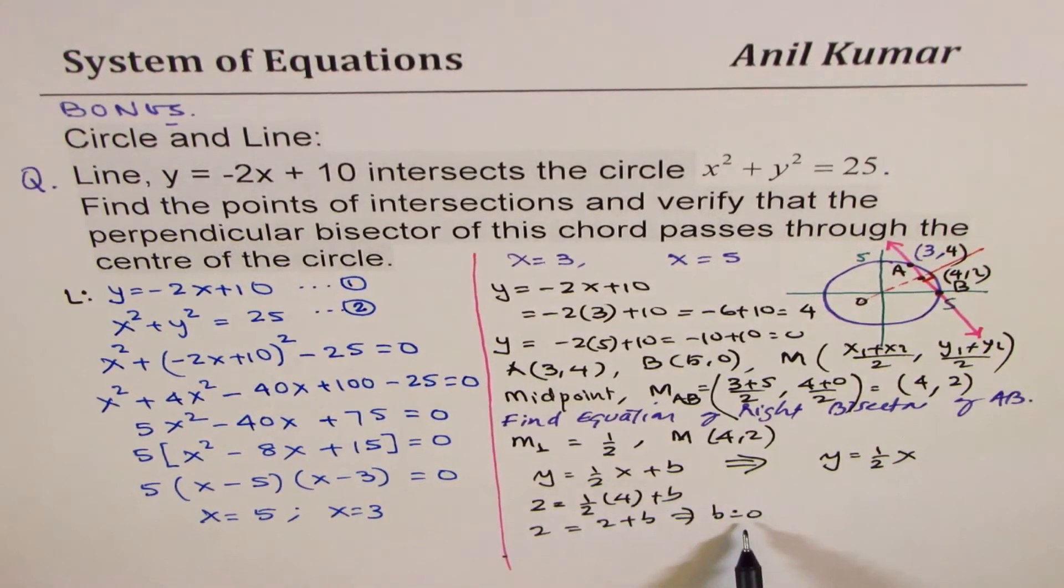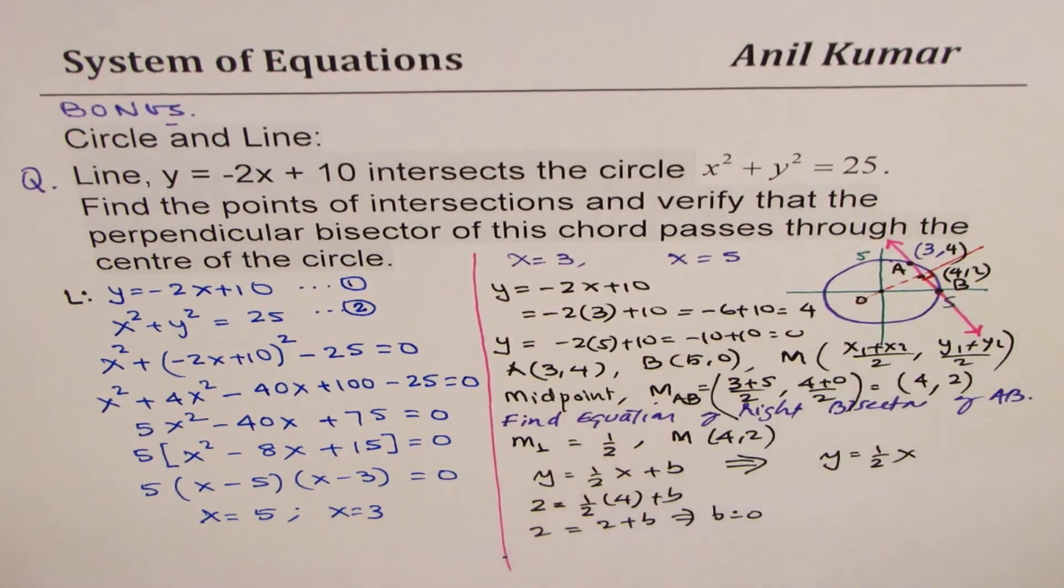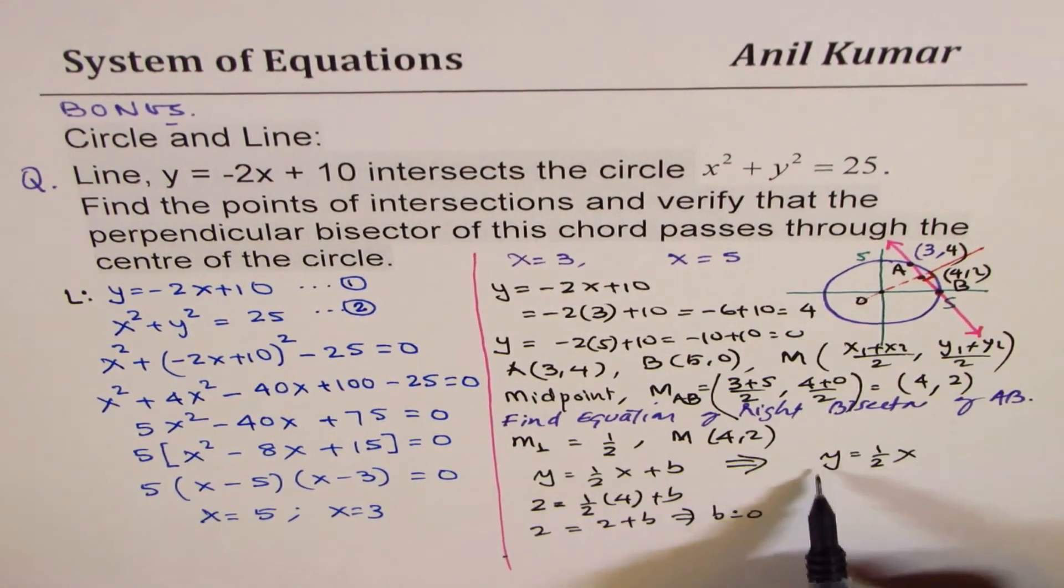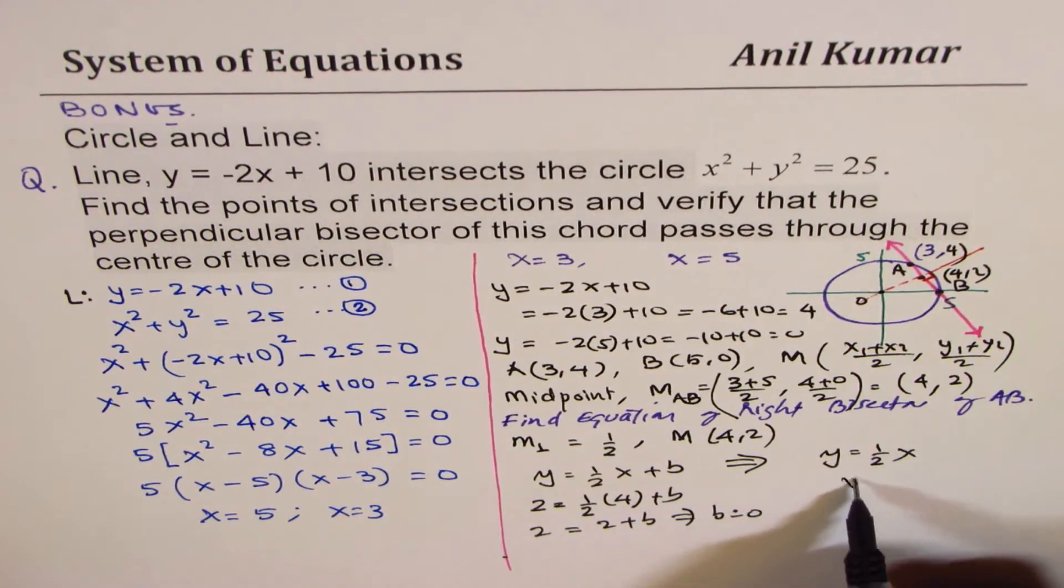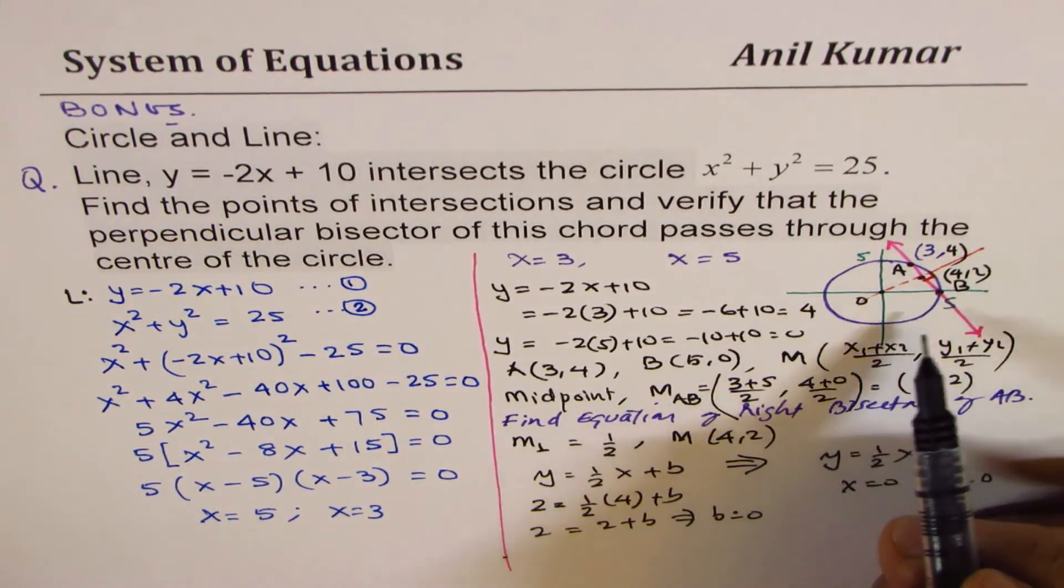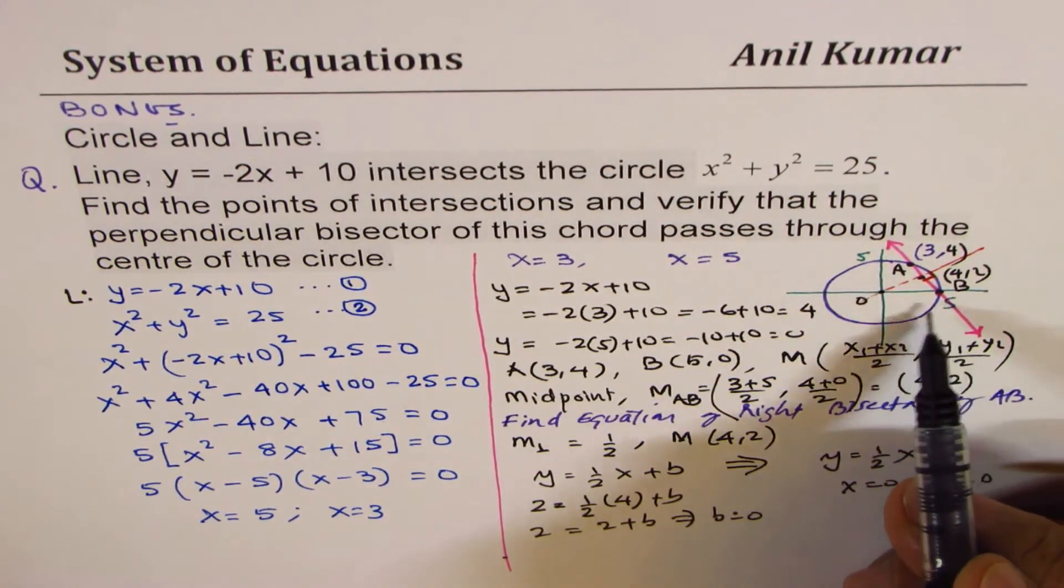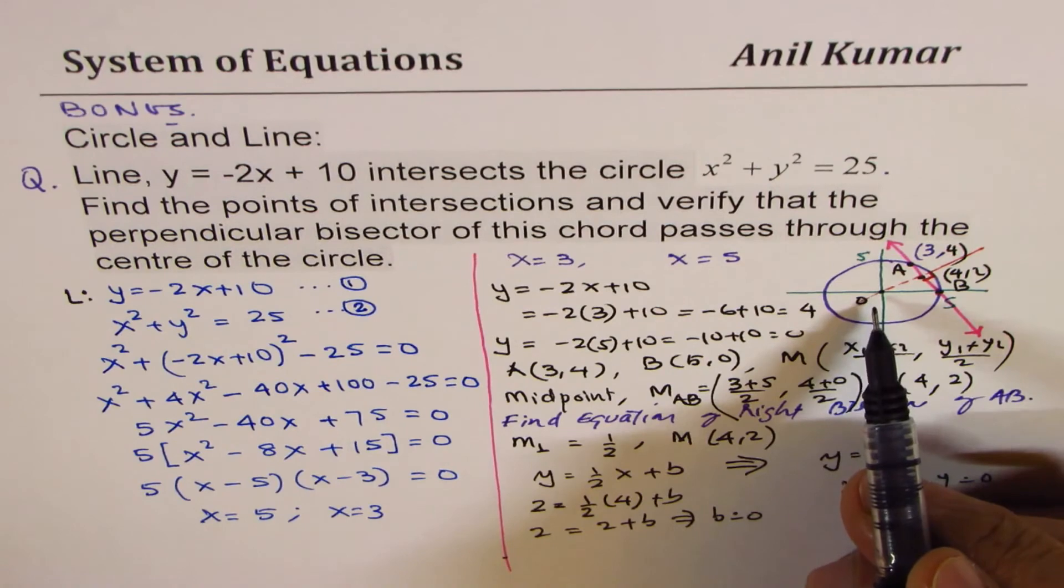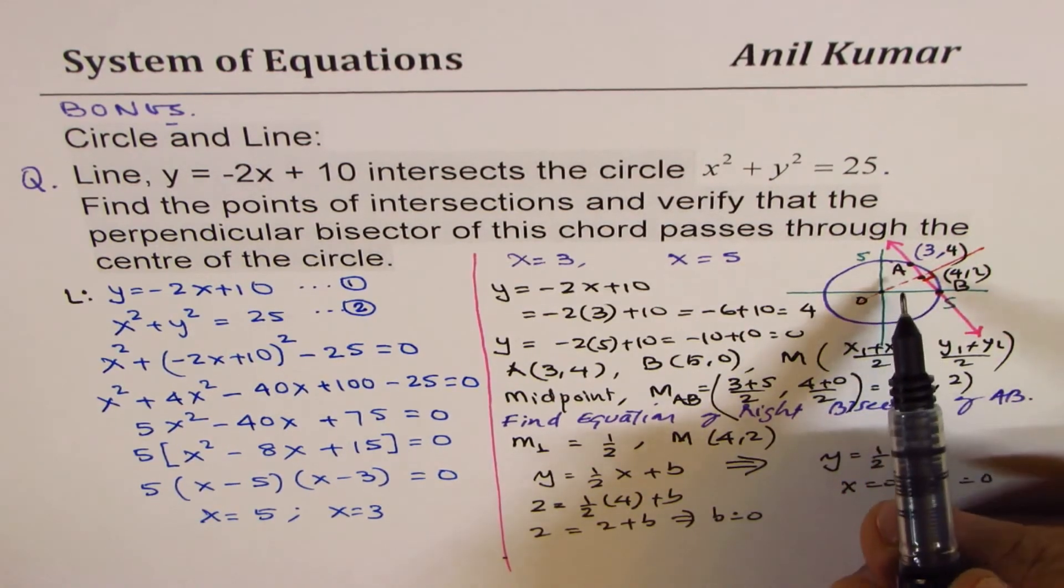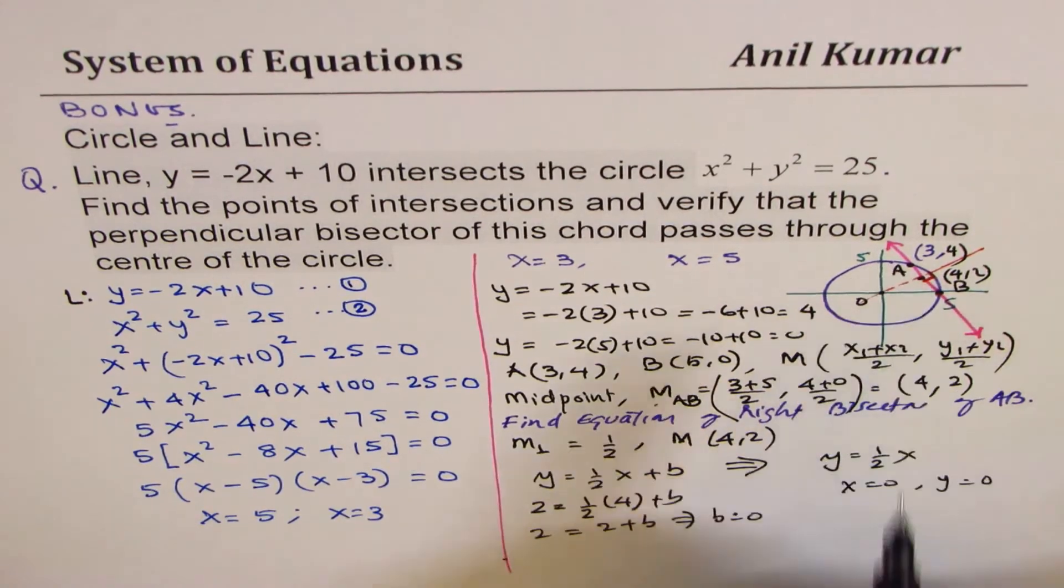Now b is 0, that means y-intercept is 0. So this line goes through the origin. On this equation, if x equals 0, y equals 0. So the perpendicular bisector of the chord AB goes through the origin. And that indicates that this chord is true.